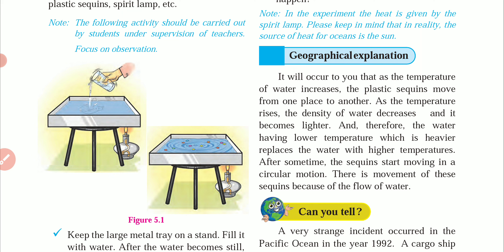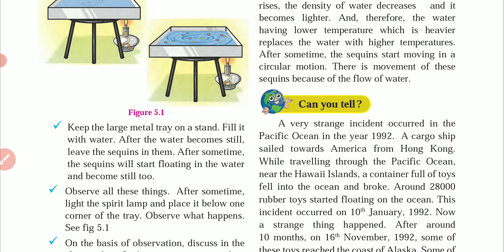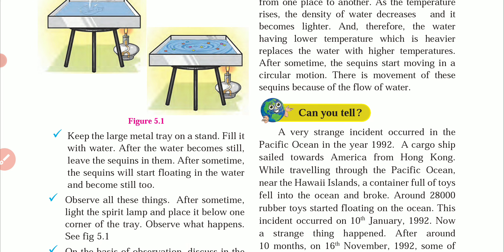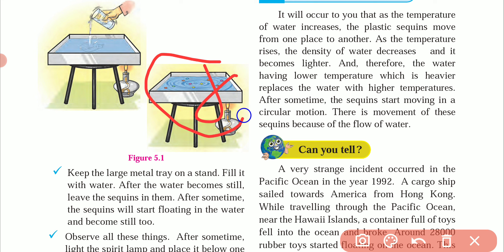First of all, in this lesson, you will see an experiment. In the experiment, you have to take a big tray, and in that tray, you have to heat the water. And then you have to add some sequins in it — little sequins that are made of plastic.